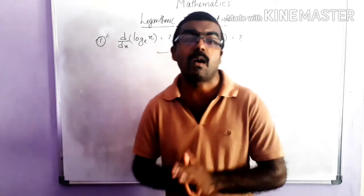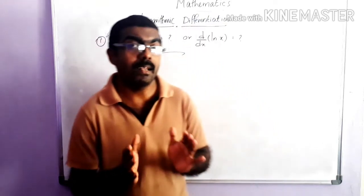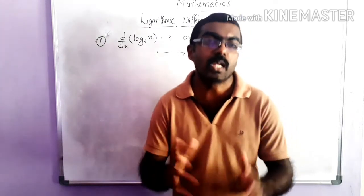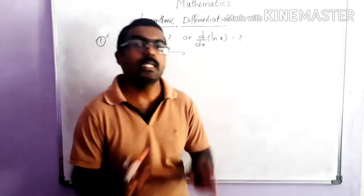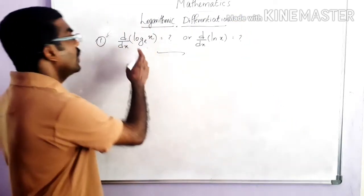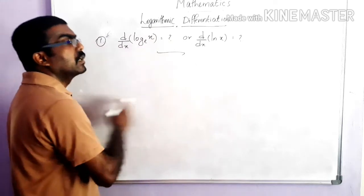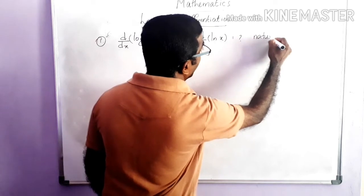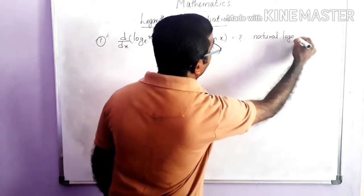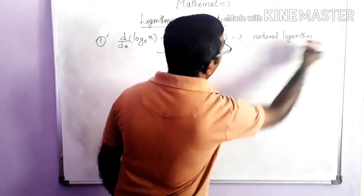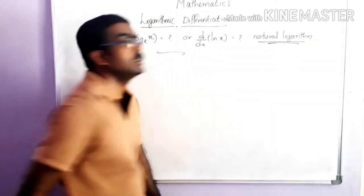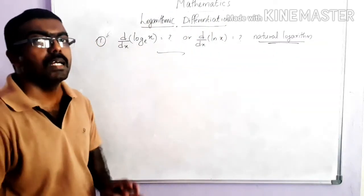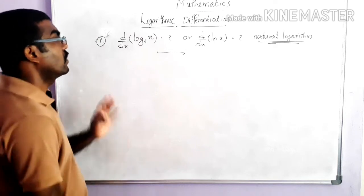Natural logarithms are also denoted by ln x. Now let me find the derivative in both cases. Consider the first case: that is a logarithm with base e, or we can write ln x, that means the natural logarithm. Logarithm with base e is called the natural logarithm, and we are going to find the derivative of log x.